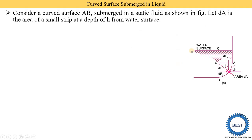Here we see the free water surface and A to B is the curved surface submerged in a liquid. As we studied in the last three cases — horizontal surface, vertical surface, and inclined surface — we start the exploration by considering one small strip which has area DA. This small strip is at a depth H from the free water surface, so the distance between the free water surface and the small strip is H, called the depth H.